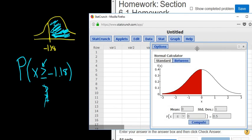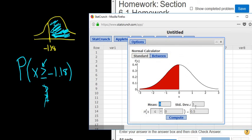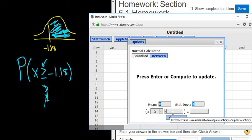All right, and the mean was 0, and the standard deviation was 1. And then we change this to greater than or equal to, and just type in negative 1.18. This is called the z-score, this number here, this negative 1.18.